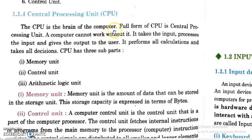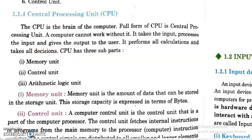The CPU is the brain of the computer. The full form of CPU is Central Processing Unit. A computer cannot work without it, because just as no one can work without a brain, the computer cannot function without the CPU. Its function is to take input, process it, and give the output to the user. It performs all calculations and takes all decisions. The CPU has three sub-parts: the memory unit, control unit, and arithmetic logic unit.